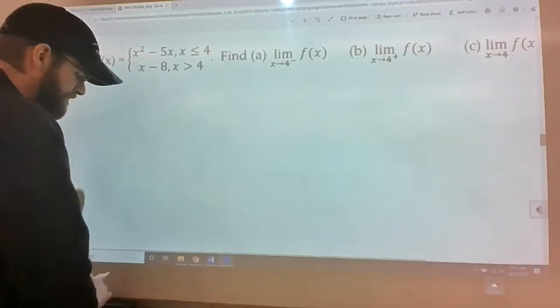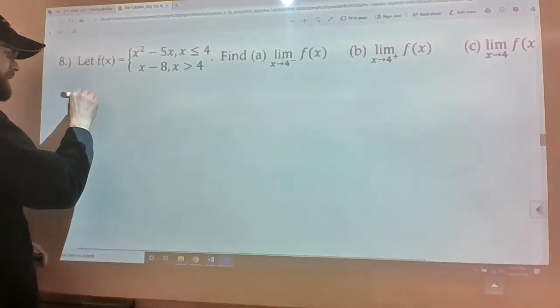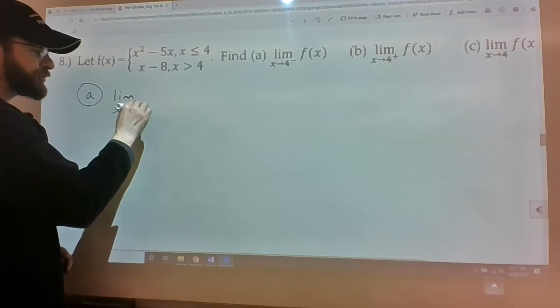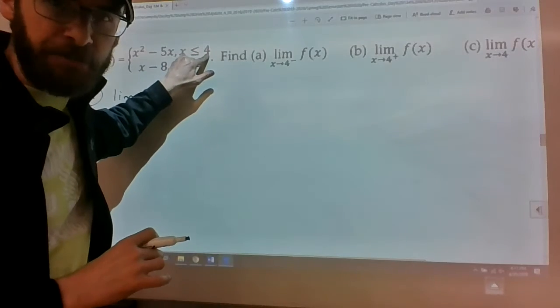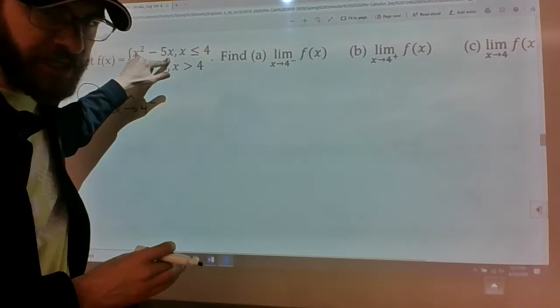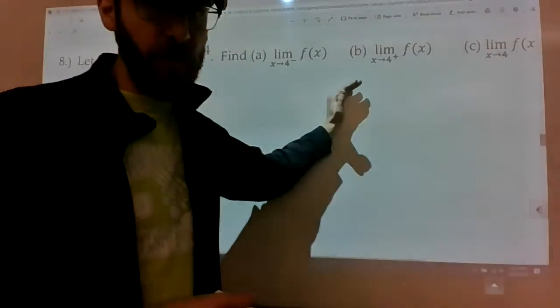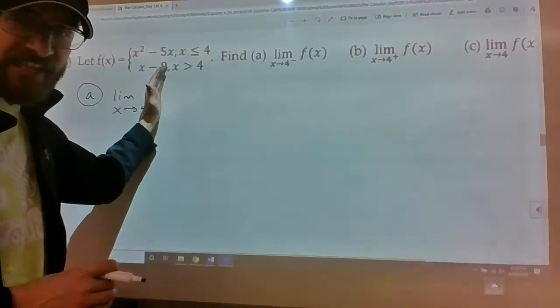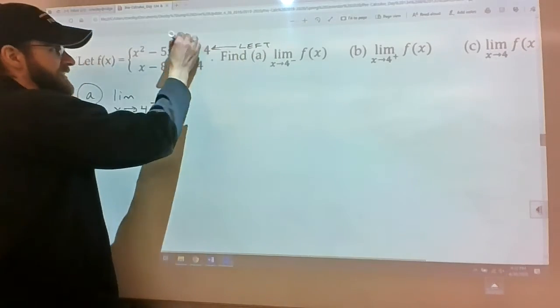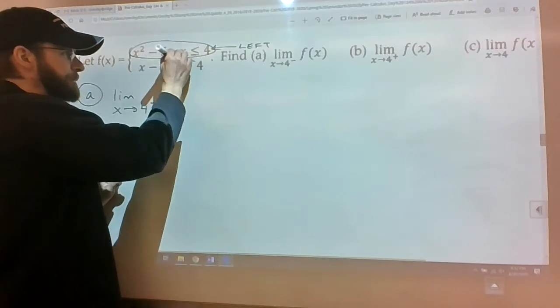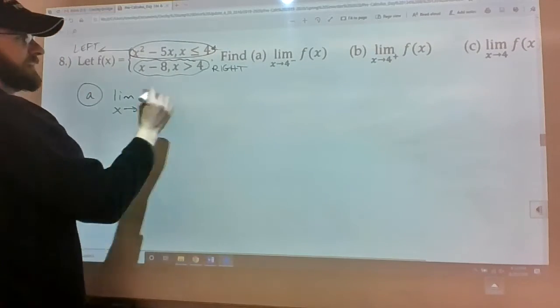which in this case is a quadratic when you are less than four and it's a linear function when you're greater than four. Just a rough sketch would be like, something's happened here and then it does this or opposites. Try to visualize this as one of these functions is coming from the left of four and one of them is coming from the right of four. This is the left. This is the right.